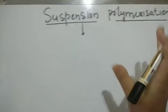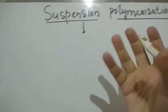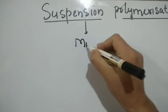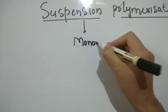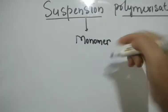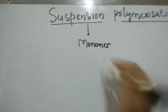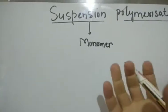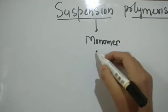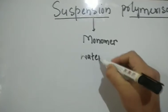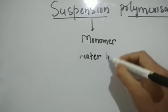So in suspension polymerization, what actually we need and why it's called suspension? We know that to get a polymer through any technique, our initial starting material is a monomer. The monomer here should be water insoluble - this is very important. So we use water as the solvent, and the monomer which is used must be water insoluble. This is the most important point.